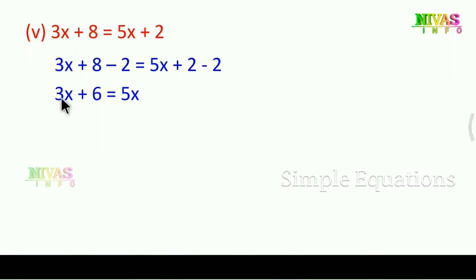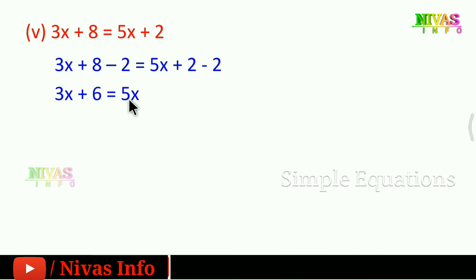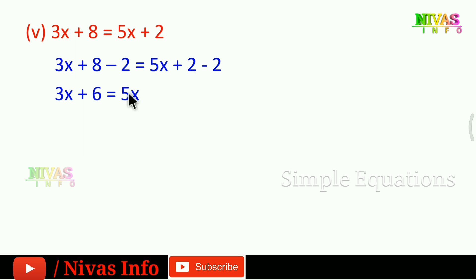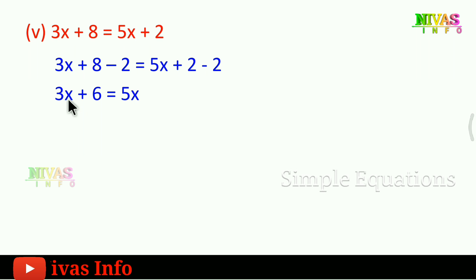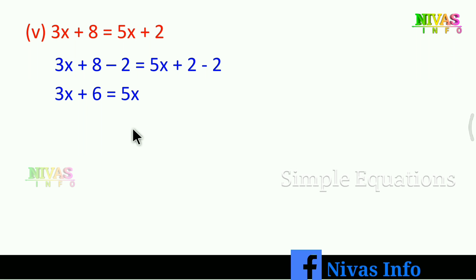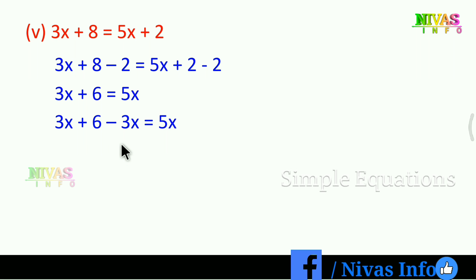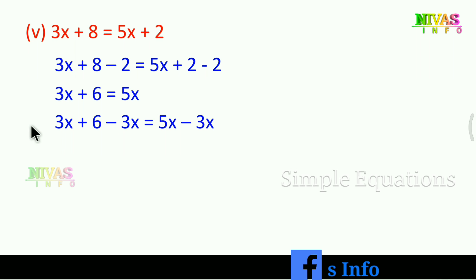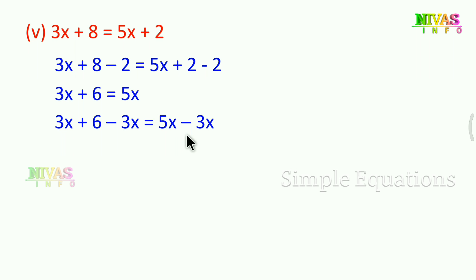Now we compare 3x and 5x. We have 2x extra on the right side. We subtract 3x from both sides: 3x minus 3x cancels on the left, leaving 6. On the right, 5x minus 3x gives 2x. So 6 is equal to 2x.